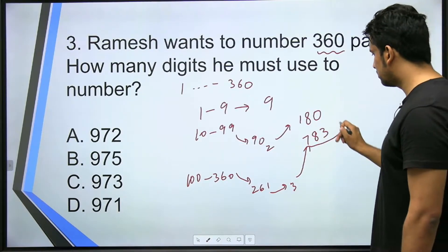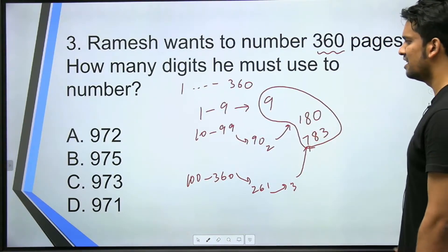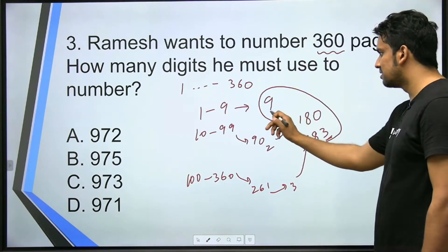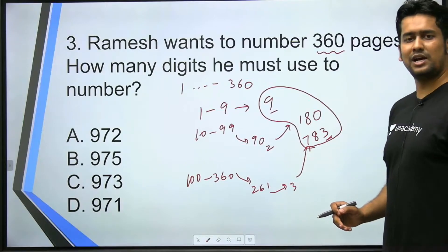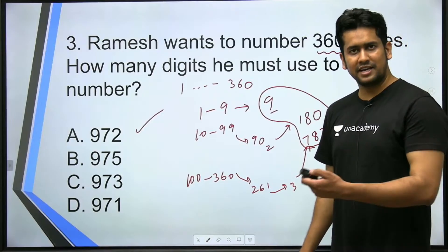So how many digits has he used in total? You can add all 3. So 783 plus 180 plus 9, you don't even need to add completely. If you can just add the last digits, 9 plus 3 equals 12. Last digit should be 2. Answer is 972.